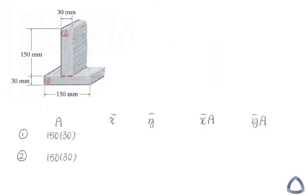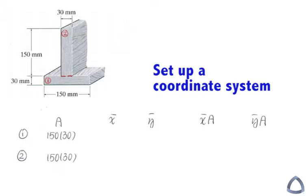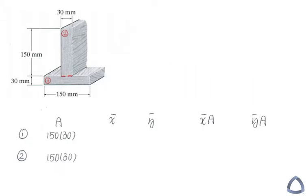So the next thing you're going to do for this table is find out what is the x bar and the y bar, which is the centroid for area number one and area number two. However, before we fill out these two columns, what you need to do is set up a coordinate system so that we can write down what is exactly x bar and y bar.